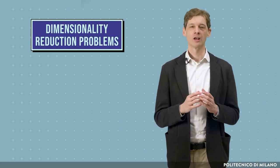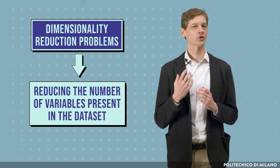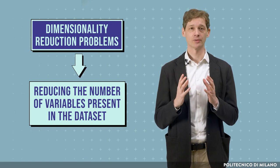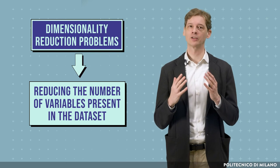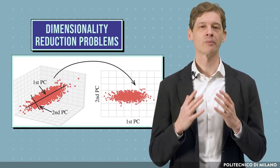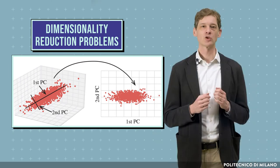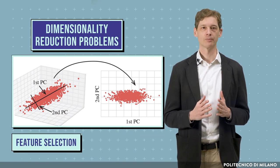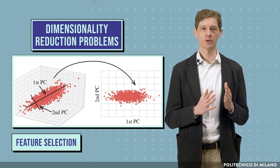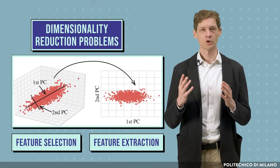The third unsupervised learning problem is dimensionality reduction. Dimensionality reduction techniques aim at reducing the number of variables present in the dataset. In most cases, these variables can have large correlations, making the representation redundant and negatively affecting the training of machine learning models. Reducing the number of variables without losing too much information is of paramount importance for increasing the efficiency and reliability of the learning process. Dimensionality reduction can be achieved through feature selection, which is the selection of a subset of the original variables, or through feature extraction, which consists of projecting the original variables into a new, usually smaller set of variables.